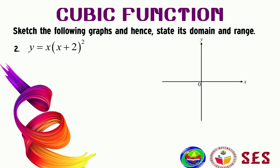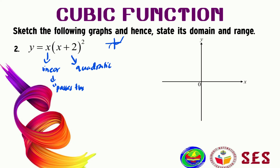Question two: y = x(x + 2)². Here x is positive, and when expanded we get a positive x³ coefficient, so the shape of the graph is like this. The linear part, x, passes through at x = 0, and the quadratic part (x + 2)² turns at x = −2.